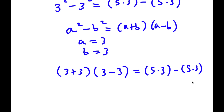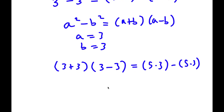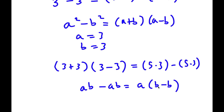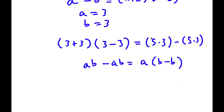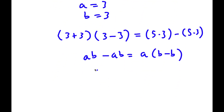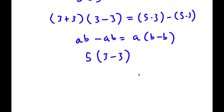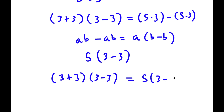For the right-hand side, if I have a times b minus a times b, this is the same as a times (b minus b). I have five times three minus five times three, so factoring out five gives me five times (three minus three). So now I have (three plus three)(three minus three) equals five times (three minus three).